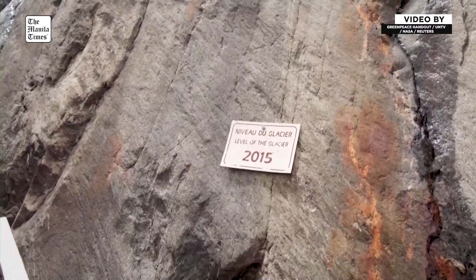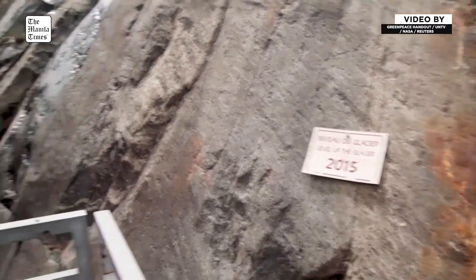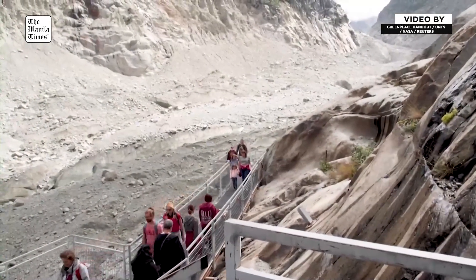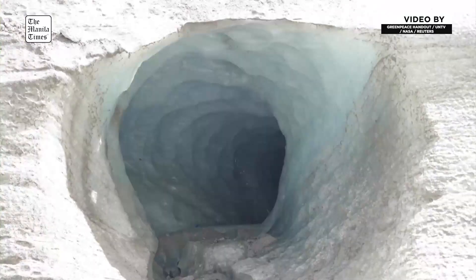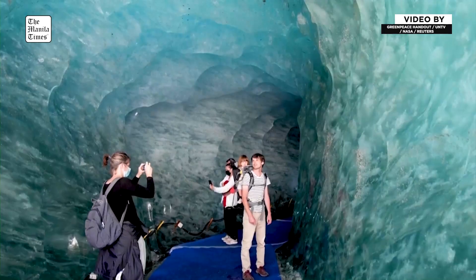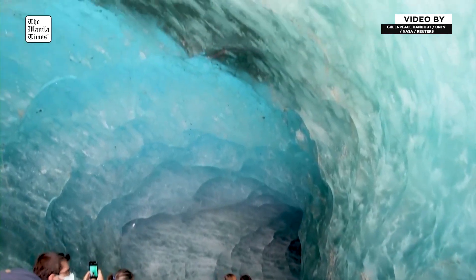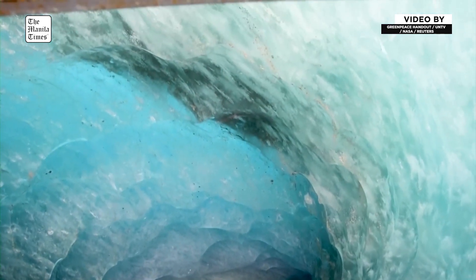Glaciers are masses of ice that form at high elevation due to snowfall staying over the entire summer and then transforming into firn and ice and flowing downhill. So glaciers are streams of frozen water that can exist and persist at very high elevation in the mountains around the world.